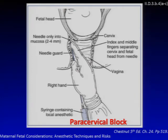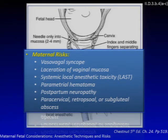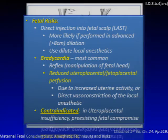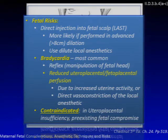For paracervical block technique, the needle is inserted to a shallow depth with fingers positioned to avoid undue pressure at the vaginal fornix. Maternal risks include vasovagal syncope, laceration of vaginal mucosa, systemic local anesthetic toxicity (LAST), parametrial hematomas, postpartum neuropathies, and paracervical, retropsoas, or subgluteal abscesses. Fetal risks include direct injection into the fetal scalp — more likely at dilation greater than 8 cm — and bradycardia, which is probably the most common adverse fetal effect due to manipulation, uterine vasoconstriction, or reduced uteroplacental perfusion. Therefore, this technique is contraindicated with known uteroplacental insufficiency or pre-existing fetal compromise.